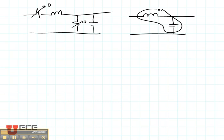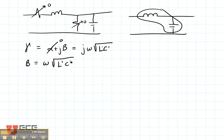The propagation constant, which is alpha plus J beta, for a lossless line, alpha will be zero. That gives us J omega square root of LC. Beta, then, is omega square root of LC.